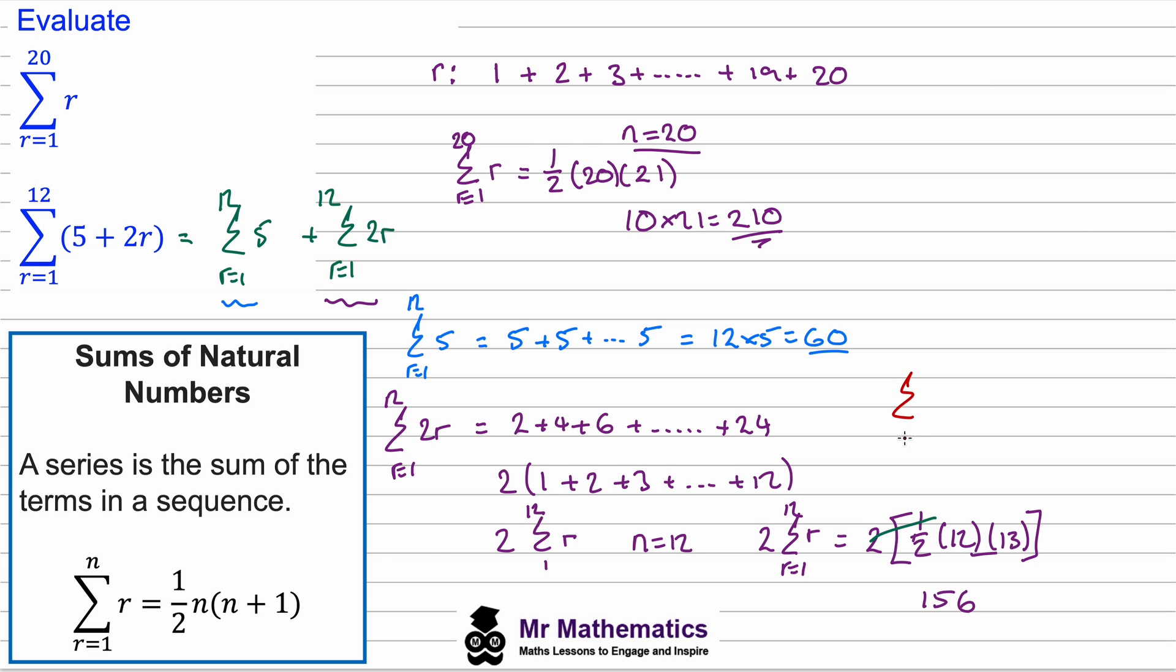So the total sum between r equals 1 to 12 of 5 plus 2r will be 60 plus 156, which gives us 216.